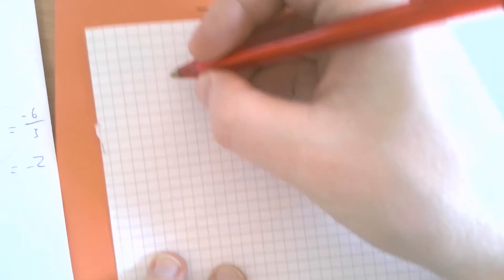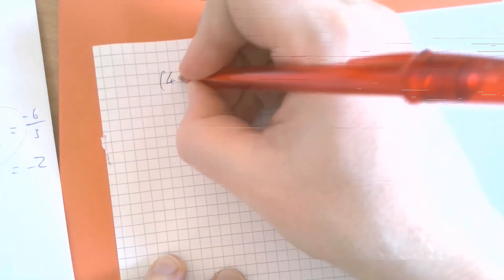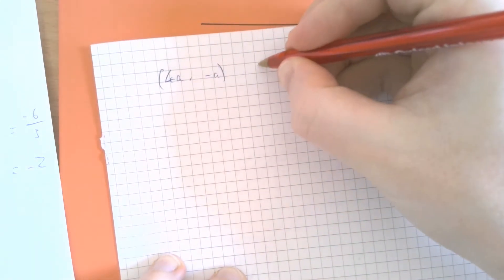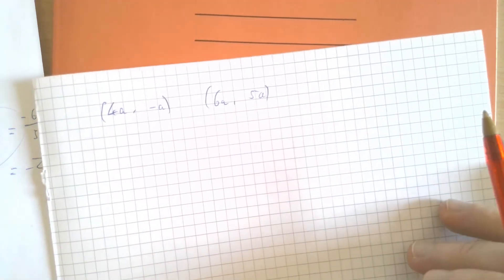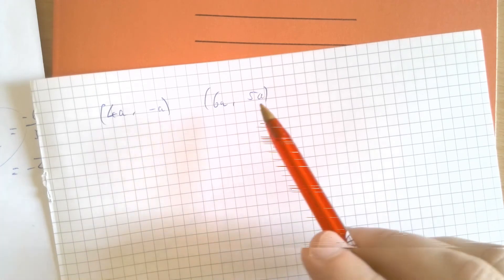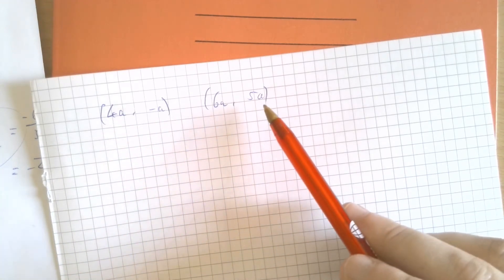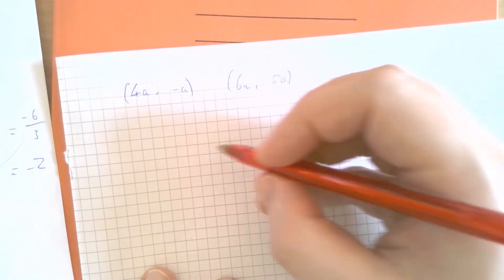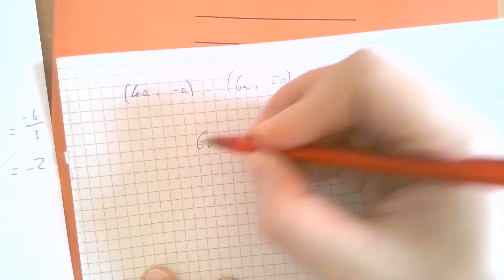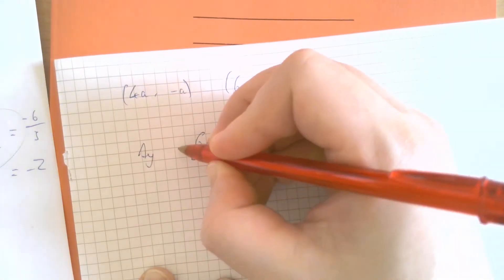So, two coordinates: (4a, -a) and (6a, 5a). What is the change in y? We've said already before, -a to 5a is an increase, an increase of 6, in this case 6a. That is the change in y.